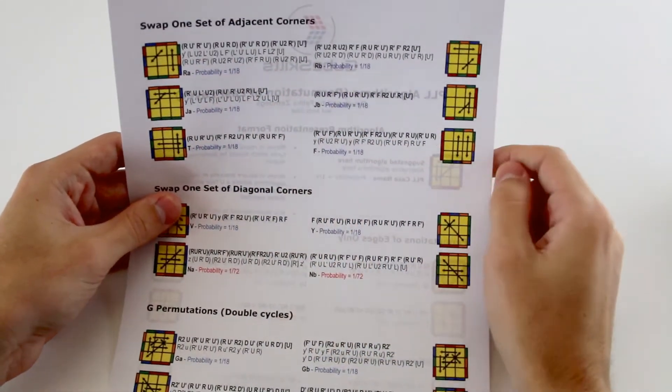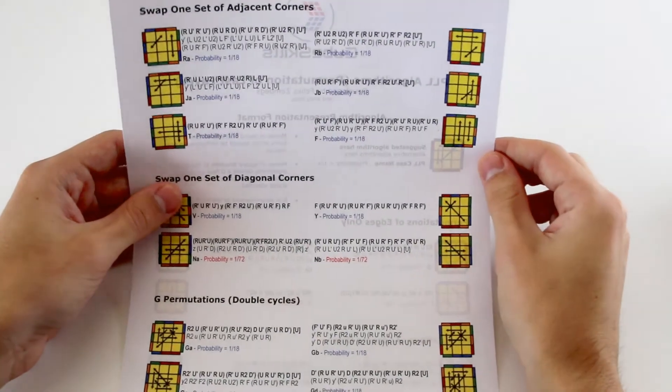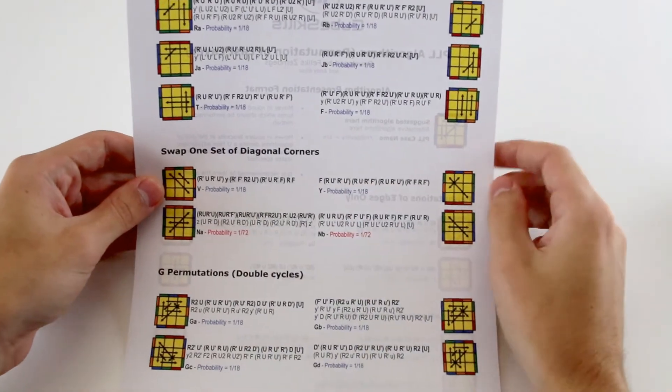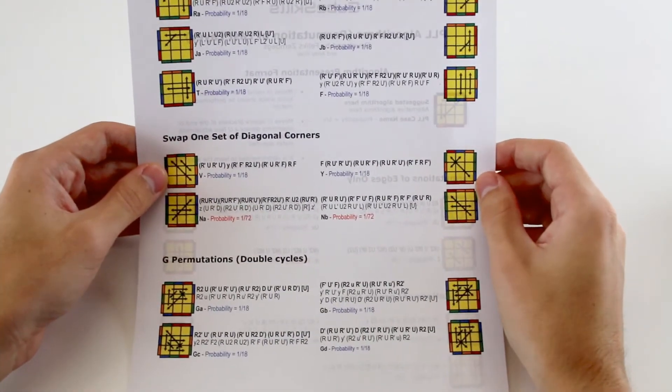The third group are the cases where you have to swap two corners adjacent to one another, and two edges. The fourth group are cases where you have to swap two corners diagonally from one another, and two edges.